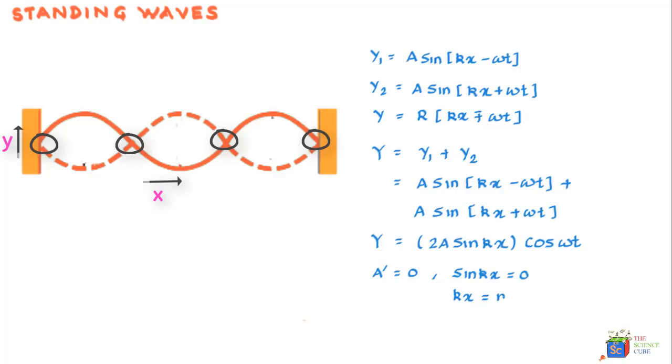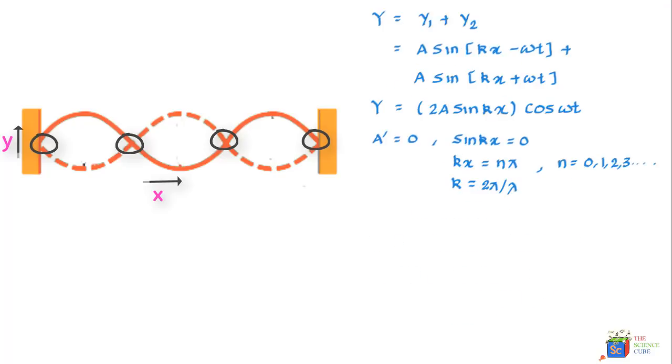So if we denote this amplitude as A dash, then we can say that A dash is equal to 0 when sin kx is equal to 0. And for this to happen, kx should equal to a multiple of pi. So we'll say it should be n pi where n is equal to 0, 1, 2, 3 and so on. And if we take k is equal to 2 pi upon lambda, what we get is x equals n lambda upon 2.